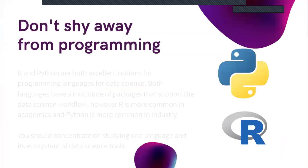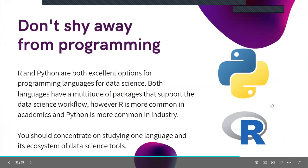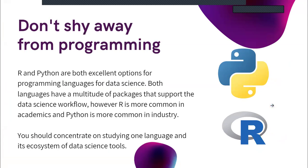Second: do not shy away from programming. There are two programming languages in the spotlight for data science: Python and R. Go ahead and learn one of them — be an expert at one. Study one language and learn its ecosystem of data science tools: how it manipulates numbers, spreadsheets, how you do machine learning with it. If you can learn both, that is wonderful.